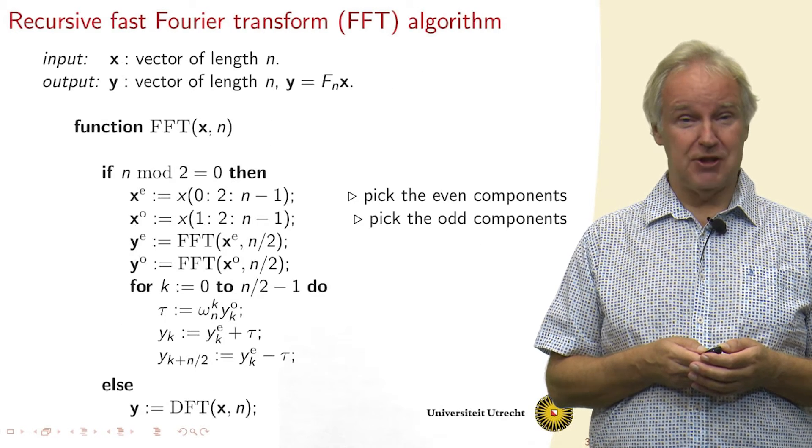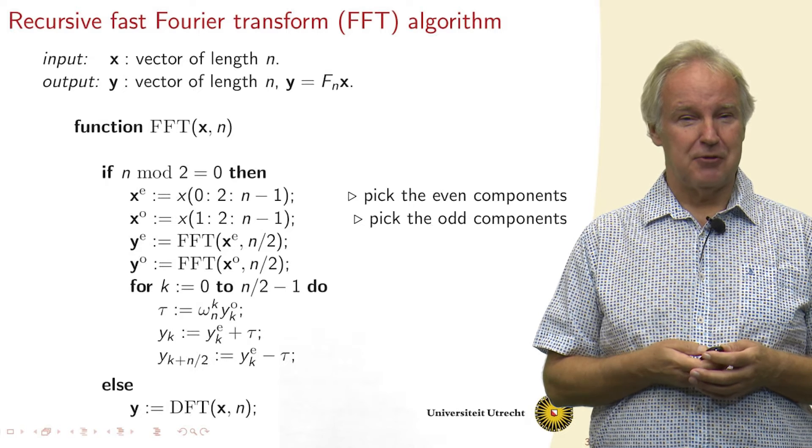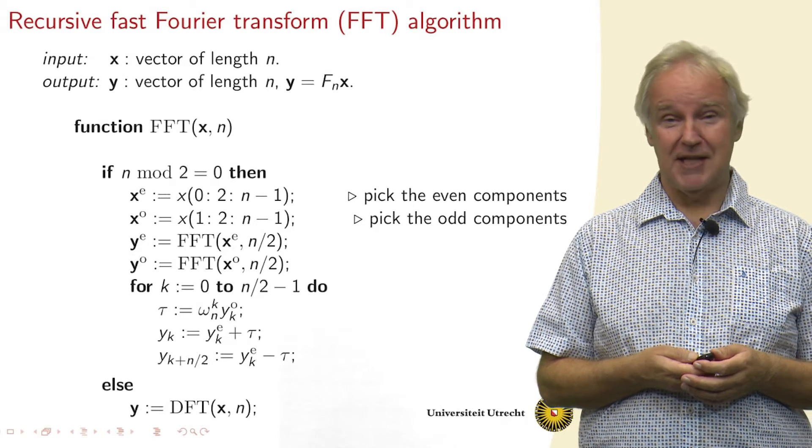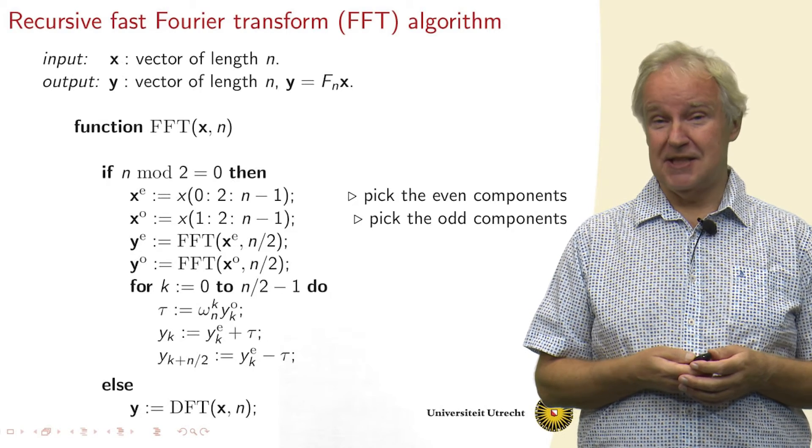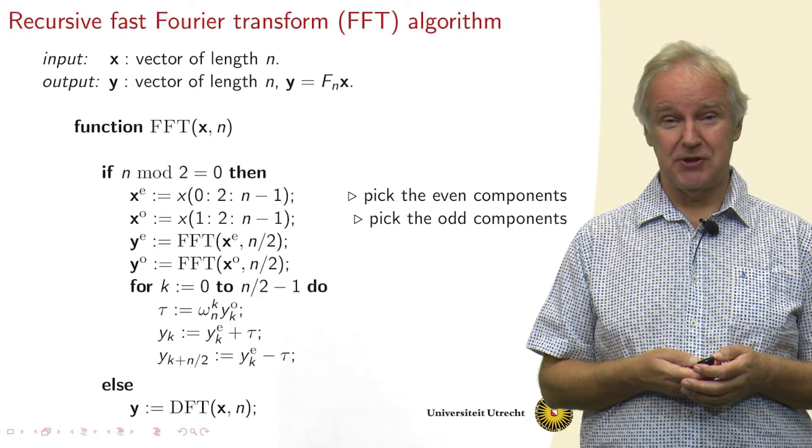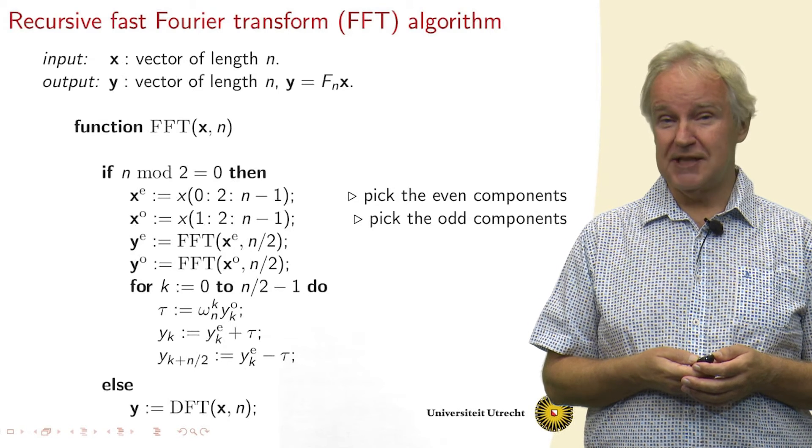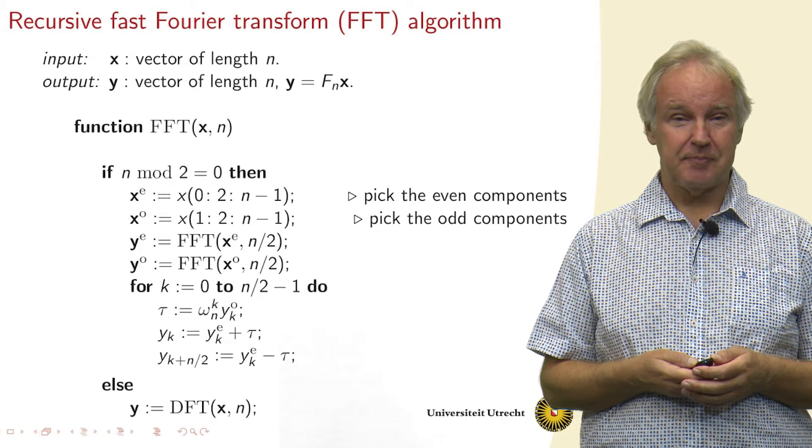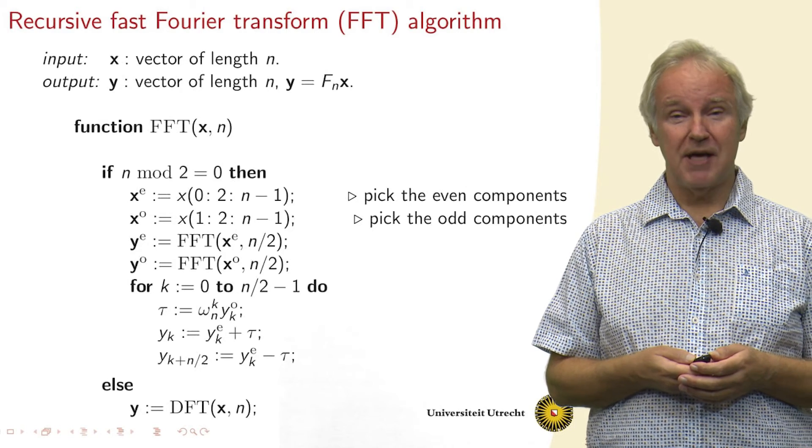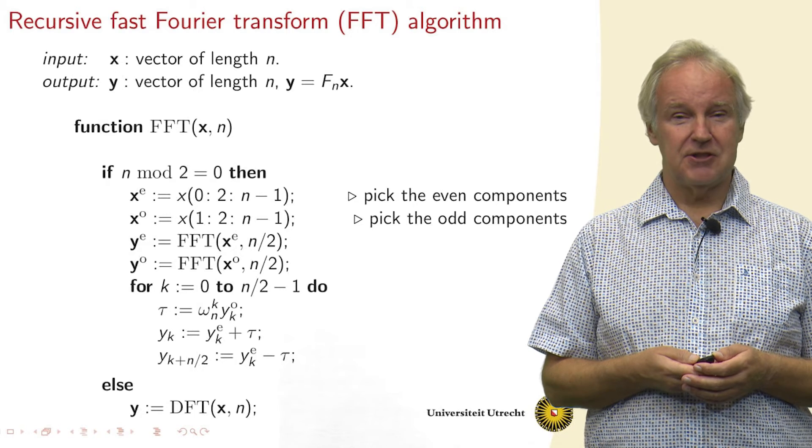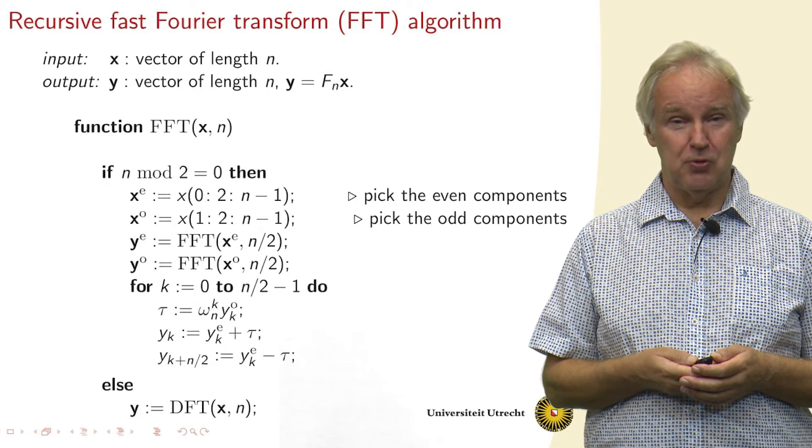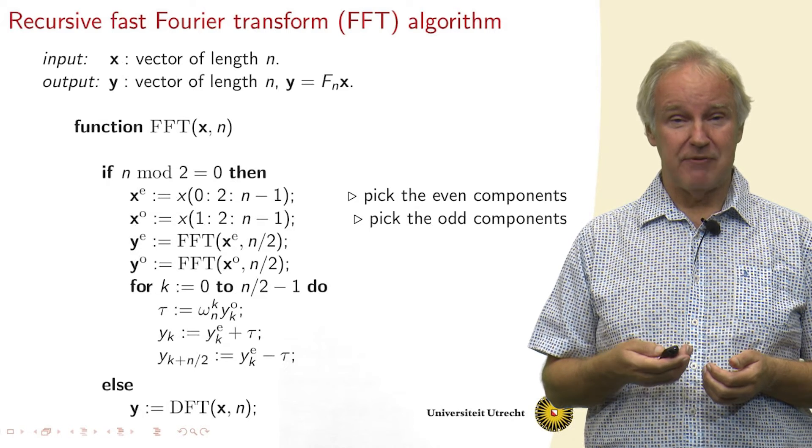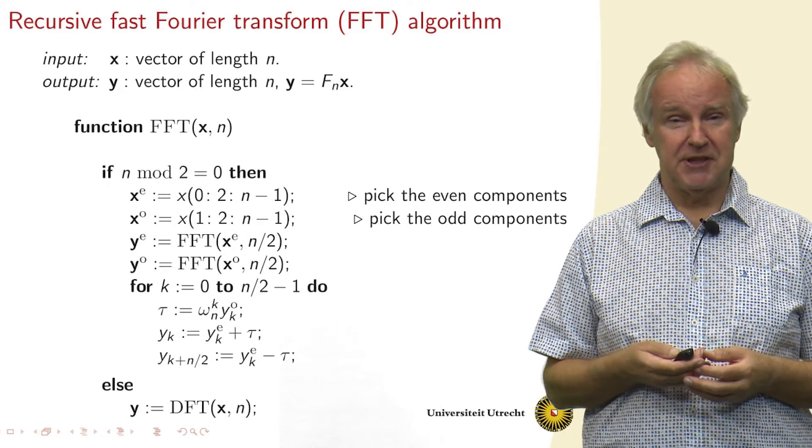So in a formulation of the algorithm, we can write the fast Fourier transform of a vector x of length n as follows. If n is even, then we do a sequence of steps. If n becomes odd at some point, we need to do the regular discrete Fourier transform. The first thing we do is pick out the even components: x starts at 0, then 2, 4, etc. We start at 0, with a step size of 2, and end when we reach n-1.